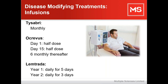We also have Lemtrada, which has a complex dosing regime. In the first year of treatment, it is given daily for five days, and then in year two, daily for three days. It has a longer lasting effect, which is why it has a shorter dosing regime.